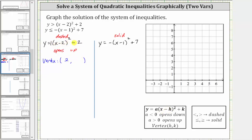And because we have plus two on the end, and we have plus k in the formula, k is positive two as well. Because we know the axis of symmetry passes through the vertex, we know the axis of symmetry has the equation x equals two. Let's go ahead and plot the vertex and sketch the axis of symmetry. So again, the vertex is two comma two, and we know the axis of symmetry passes through the vertex.